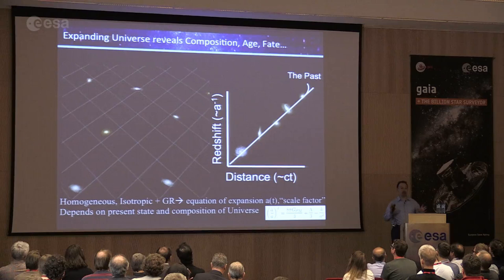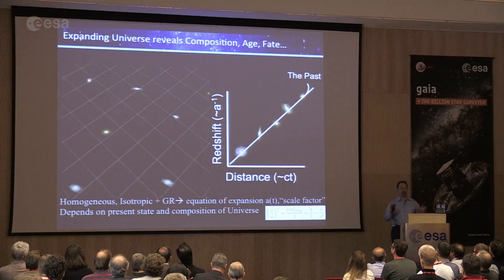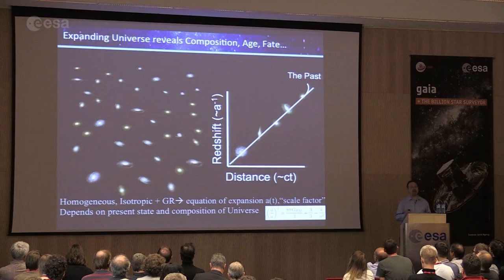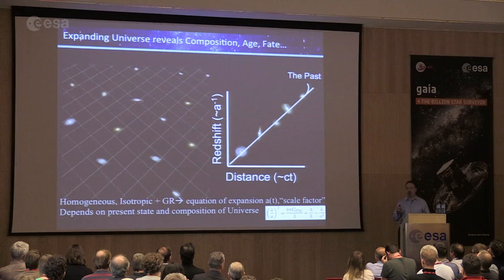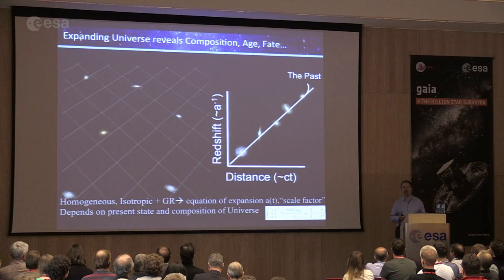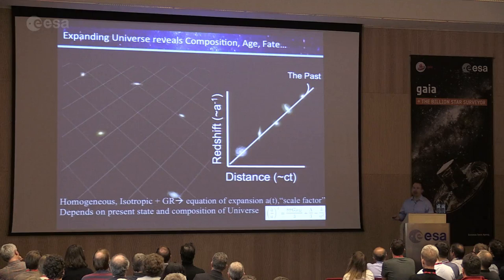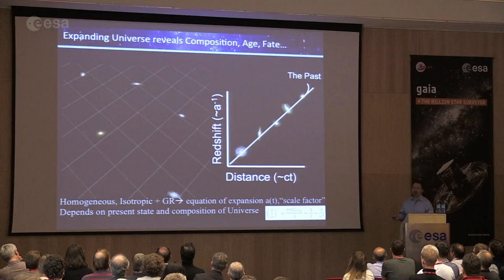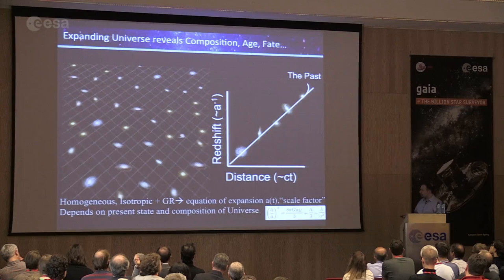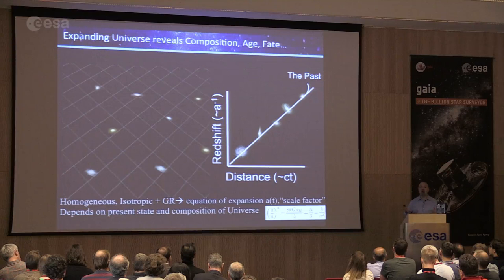The universe is homogeneous and isotropic on large scales — it looks more or less the same everywhere. Combined with Einstein's general relativity, this allows us to derive one equation: the equation of motion for the universe. We describe the expansion as a change in the scale factor 'a' — a square grid changing with time. This is the Friedmann equation, around for 70–80 years, telling us how 'a' changes with time — how the universe expands or contracts.